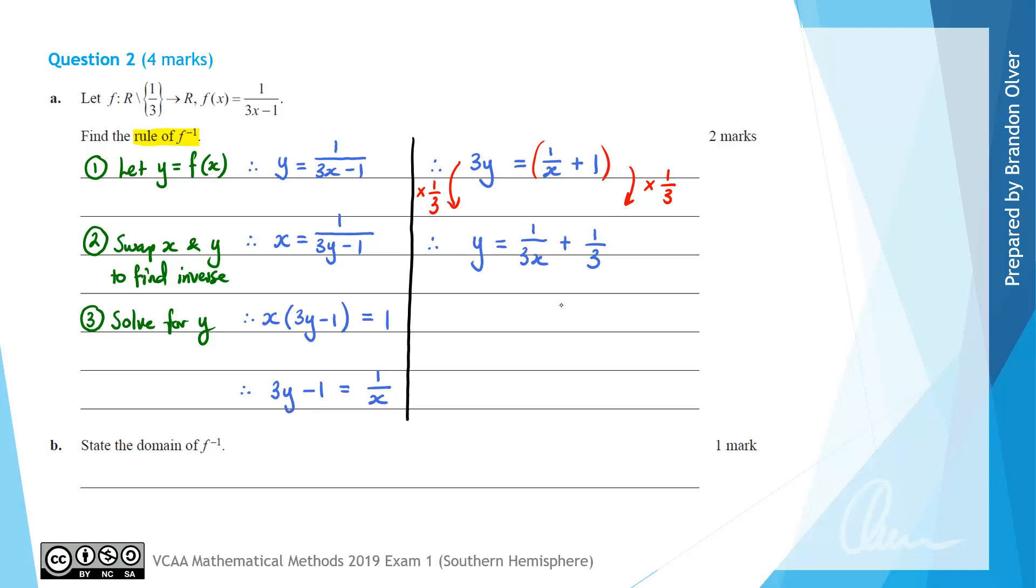We're almost there except we don't like to quote an inverse as y equals. We need to use correct notation. This is our fourth step. Therefore f inverse of x equals 1 divided by 3x plus 1/3. That is the answer to that part of the question.